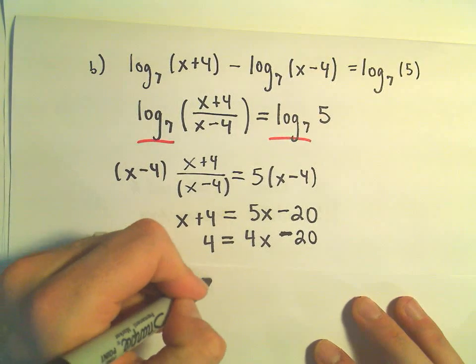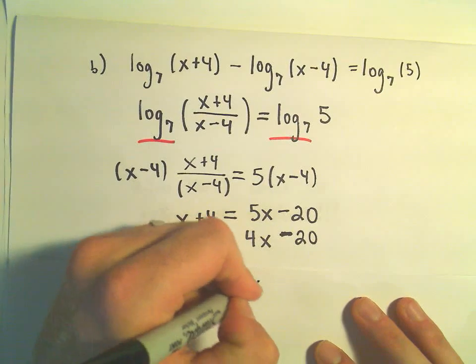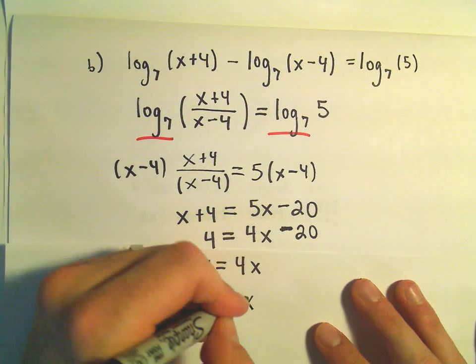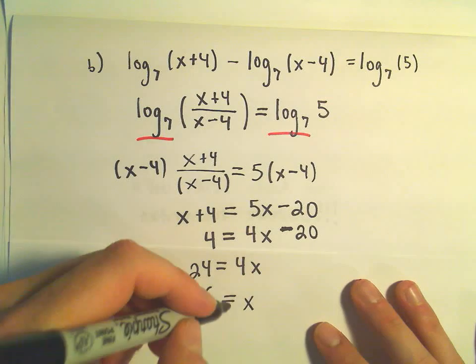So if we add 20 to both sides, that will give us 24 equals 4x. And if we divide both sides by 4, we'll get x equals 6.